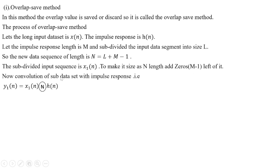Perform convolution of each sub-dataset with the impulse response. The impulse response of the sub-dataset x is convolved to produce output y. Apply the same process for all data sequences.